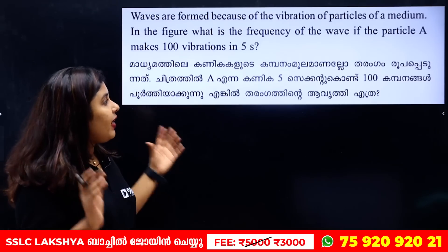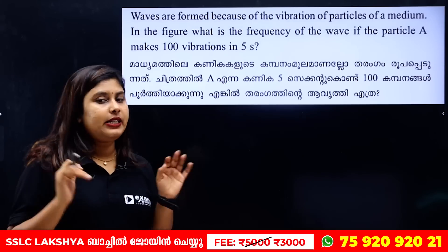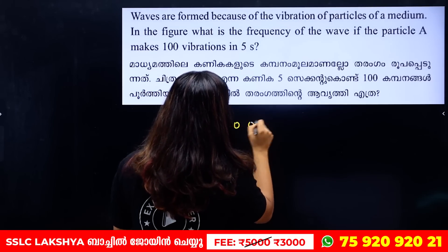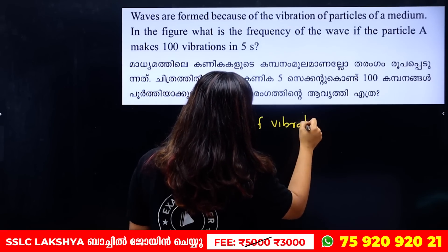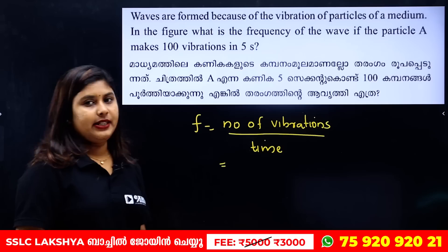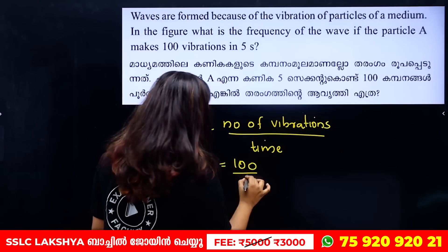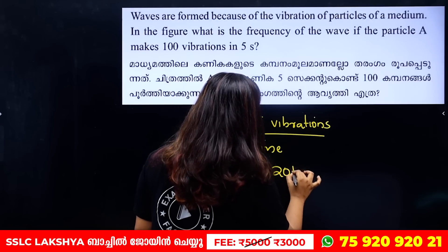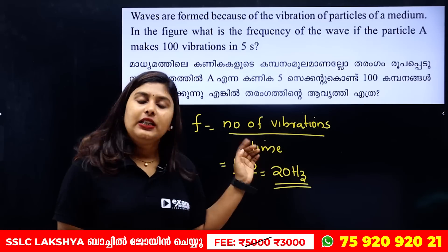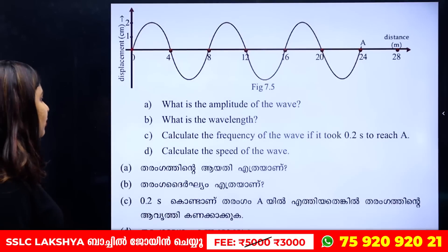In the figure, what is the frequency of the wave if particle A makes 100 vibrations in 5 seconds? Frequency equals number of vibrations divided by time. Number of vibrations is 100, time is 5 seconds — that gives 20 Hz.